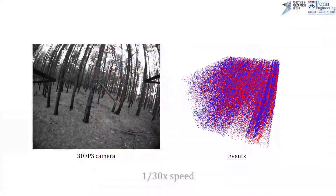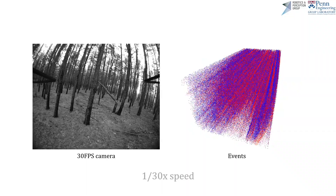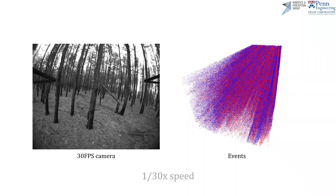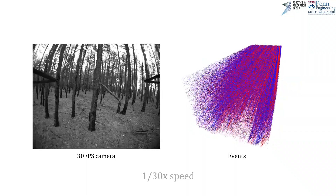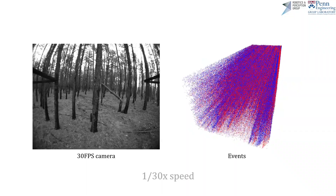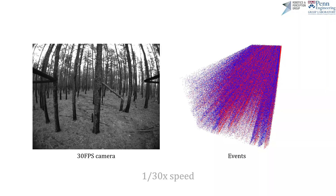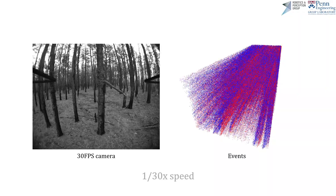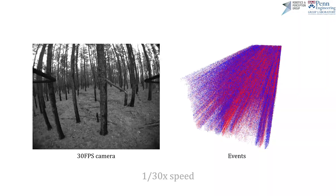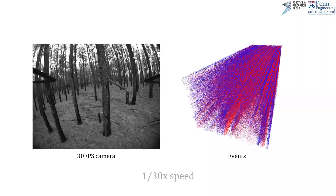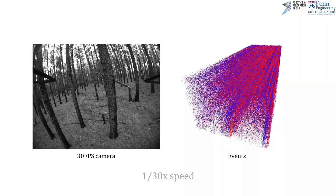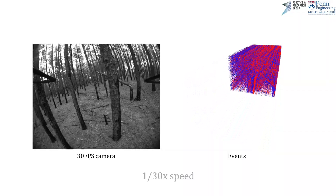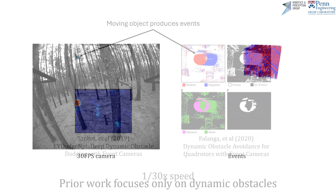While traditional cameras render frames of a scene at 30 or 60 Hz, an event camera is a near-continuous vision sensor conveying changes in appearance at each pixel. These events are triggered with microsecond latencies, with almost no motion blur and high dynamic range.